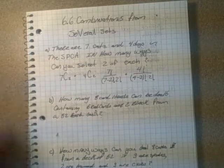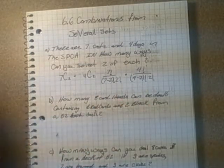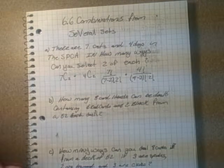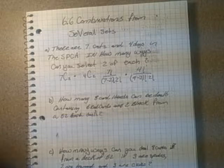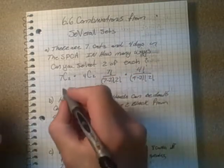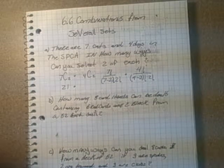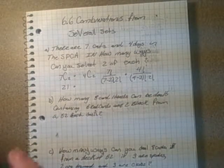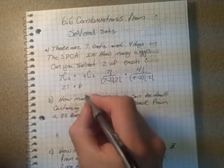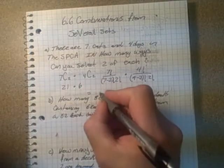We can plug this into our calculators to work them out, but it's a good idea to write that out so you can get part marks if you push the wrong button on your calculator. So 7C2, that's 21. And 4C2, 6. Multiply those two together and you get 126 ways.